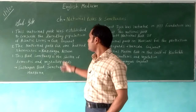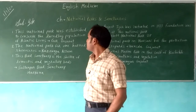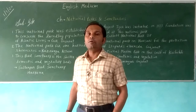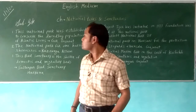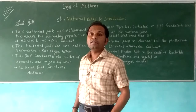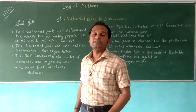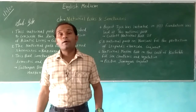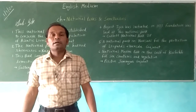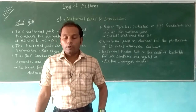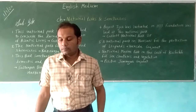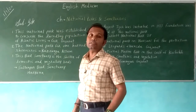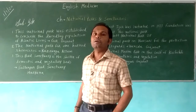Second, the Kaziranga National Park was built for the one-horned rhino. It is located in Assam and is known for its tall grass and one-horned rhinos. It is specially for the protection of one-horned rhinos and other animals.